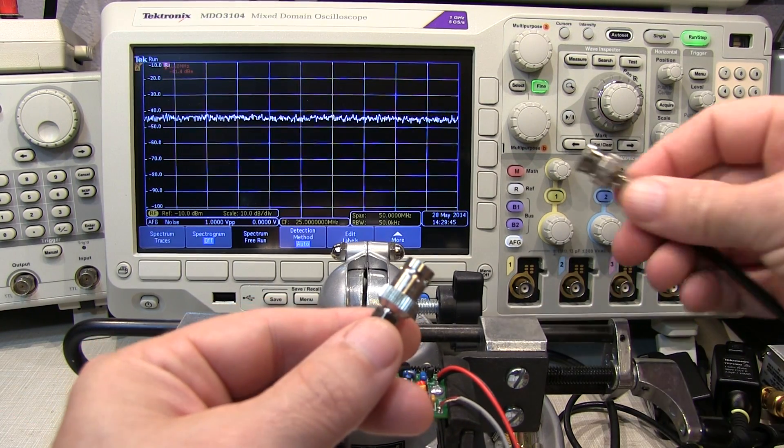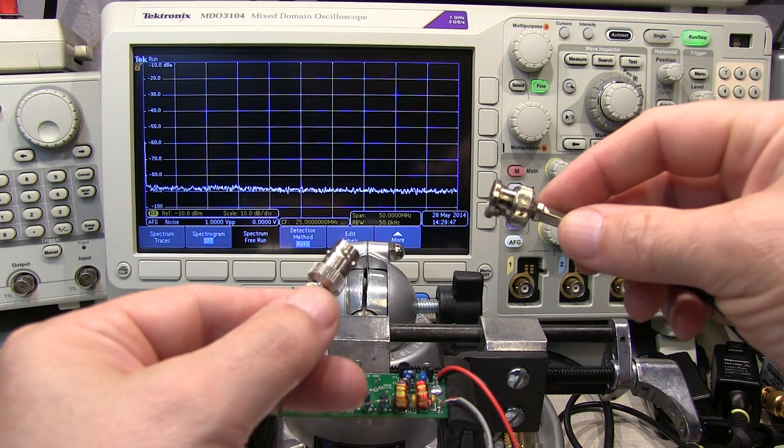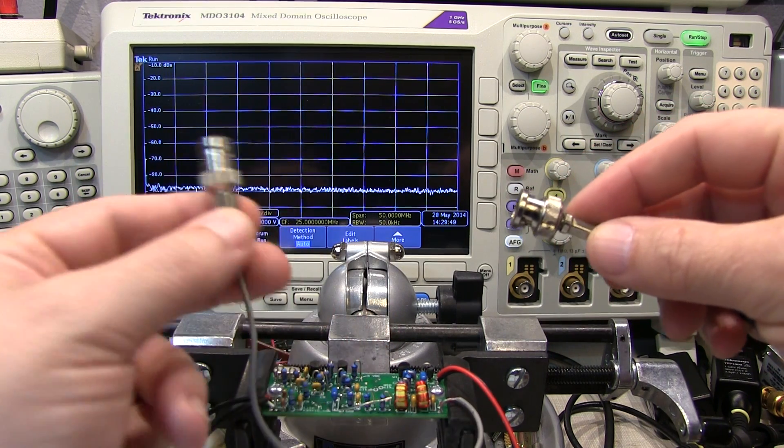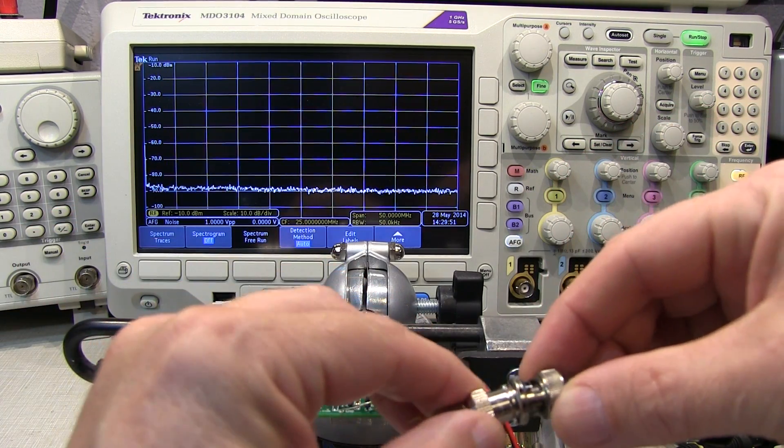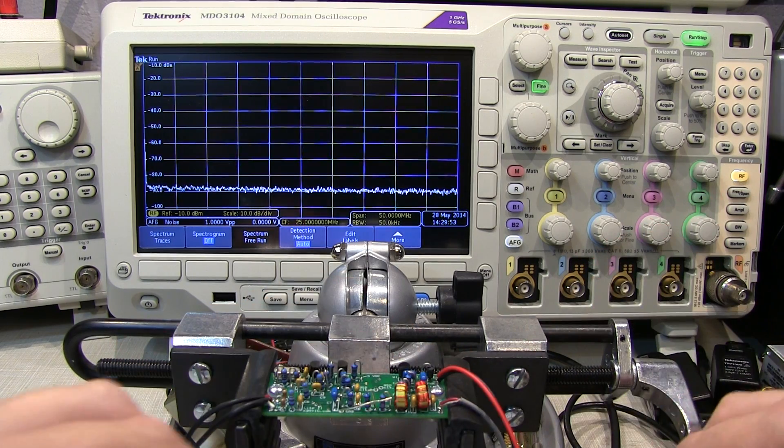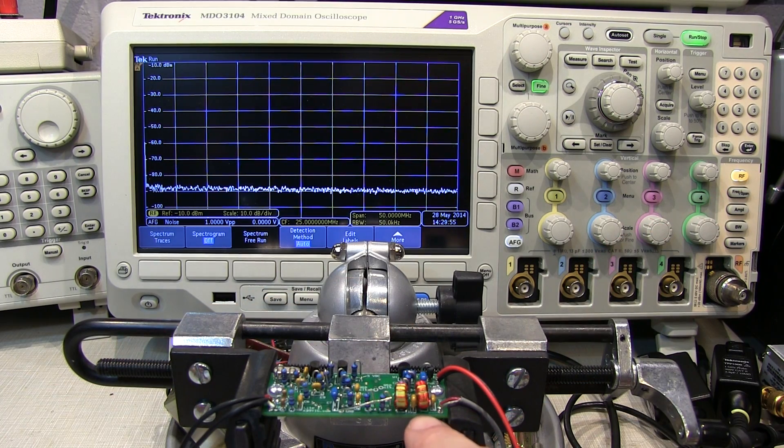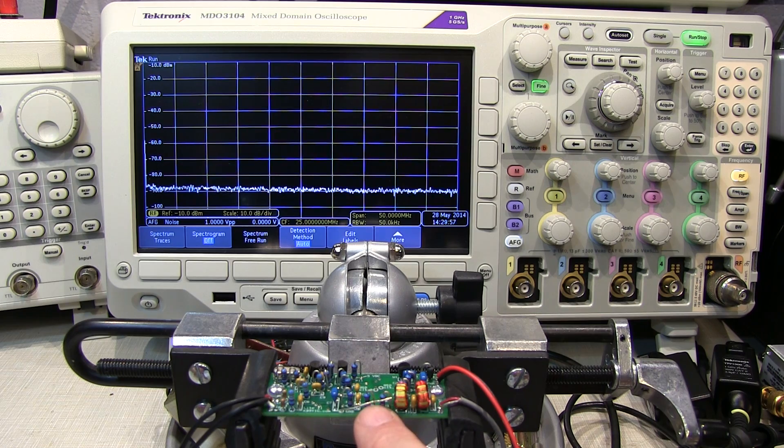So the next thing we'll do is take the output from the function generator noise source and put it as the RF input to this filter. So now we're applying that to the input of our bandpass filter here, and we'll measure the output here.